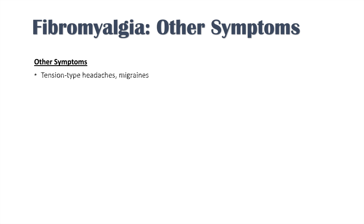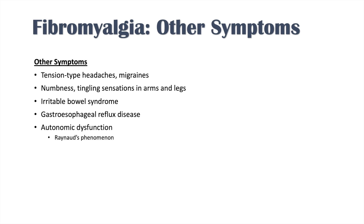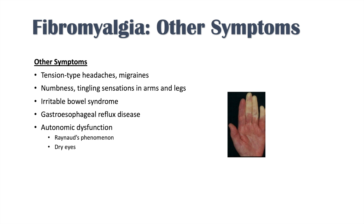Other symptoms include tension-type headaches and migraines. They can have paresthesias like numbness and tingling sensations, especially in their arms and legs. They can also have irritable bowel syndrome, gastroesophageal reflux disease, and autonomic dysfunction, which leads to a variety of other signs and symptoms like Raynaud's phenomenon, dry eyes, and orthostatic hypotension.